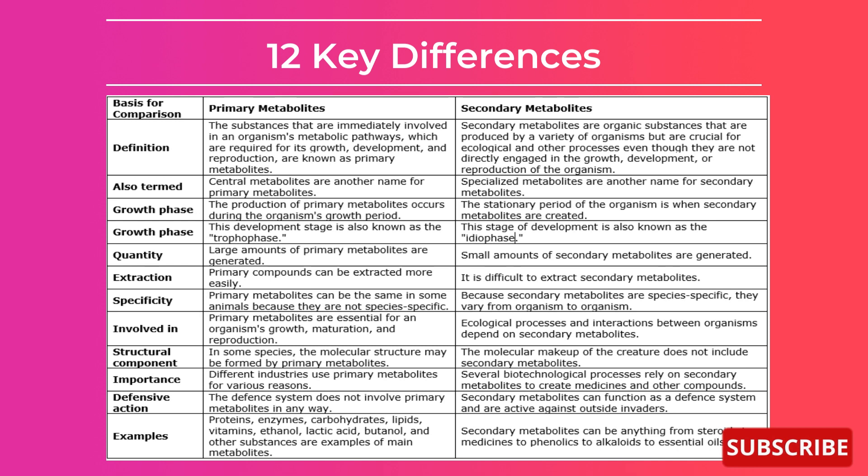In terms of importance, primary metabolites are used in different industries for various reasons, whereas secondary metabolites are used in several biotechnological processes to create medicines and other compounds. Primary metabolites do not involve a defensive system, whereas secondary metabolites can function as a defensive system and are active against outside invaders. Examples of primary metabolites include proteins, enzymes, carbohydrates, lipids, vitamins, ethanol, lactic acid, and butanol. Examples of secondary metabolites include steroids, medicines, phenolics, alkaloids, and essential oils.